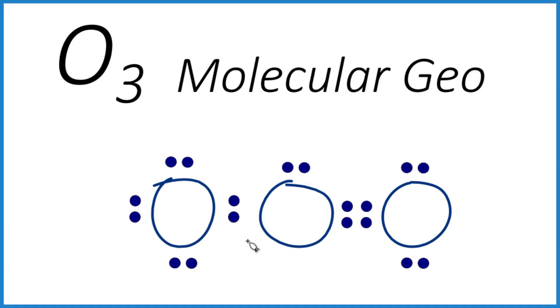So when you look at our Lewis structure for O3, it looks kind of linear, right? Straight line. But it's not symmetrical. This lone pair up here, that's really important. So let's jump over and build the molecule here, and you'll see why.